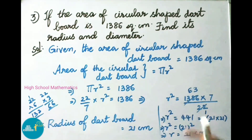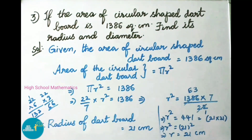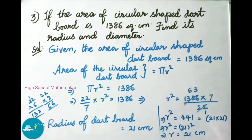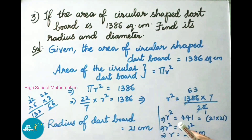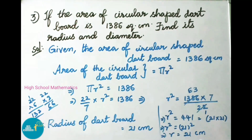That implies R squared equals 63 into 7, which is 441. Now 441 can be written as 21 into 21. That implies R squared equals 21 whole squared. On both sides we cancel the square, so R equals 21 centimeters.